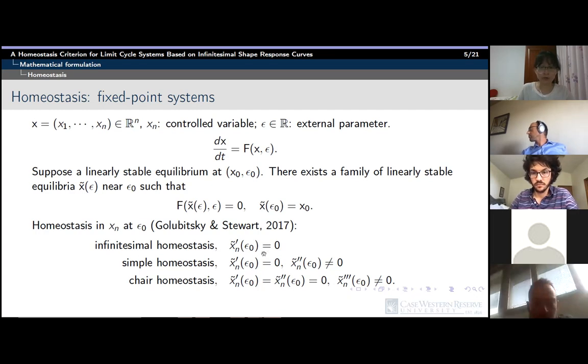Golubitsky and Stewart formulates the notion of infinitesimal homeostasis as the condition that the derivative of the controlled variable at the steady state solution with respect to the external parameter should vanish at some point, hence approximately constant near that point. The infinitesimal homeostasis points require zero first order derivative. If further, the second order derivative is non-zero, then this is a point of simple homeostasis.